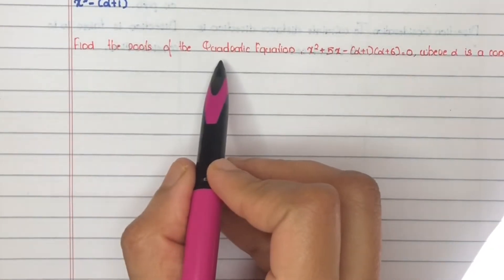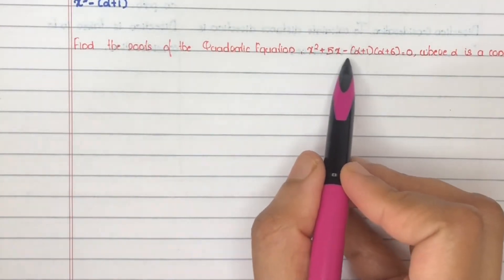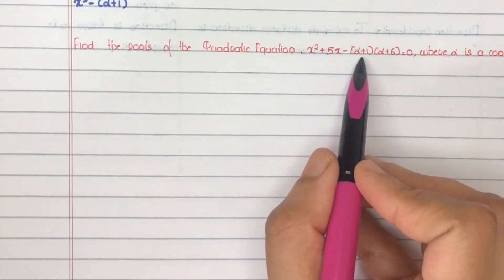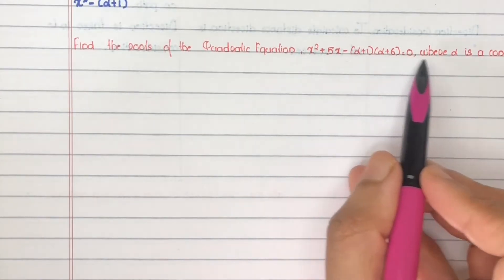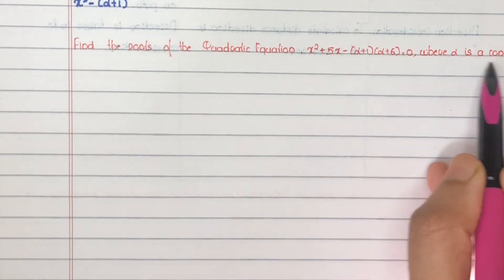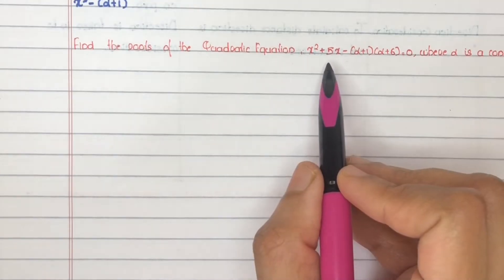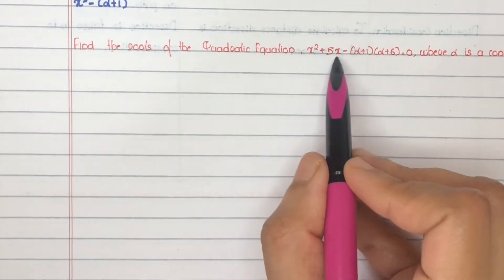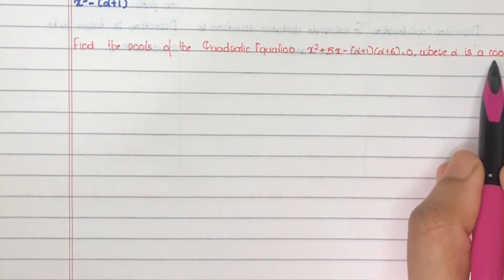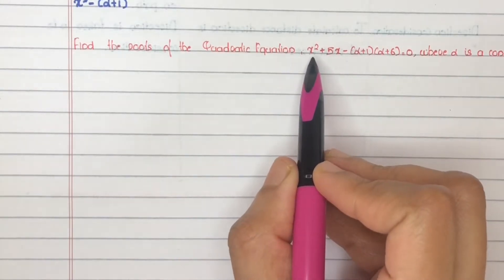Find the roots of the quadratic equation x squared plus 5x minus (alpha plus 1)(alpha plus 6) equals 0, where alpha is a constant. The variable is x and alpha is a constant, so the question is to find the values of x.